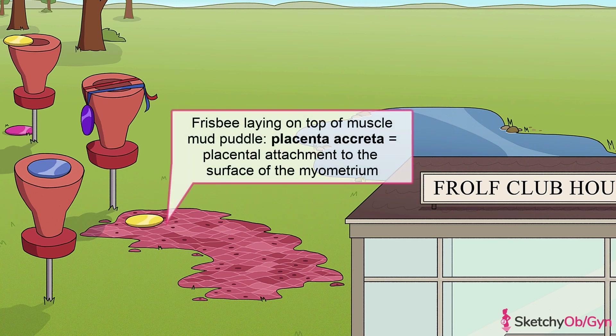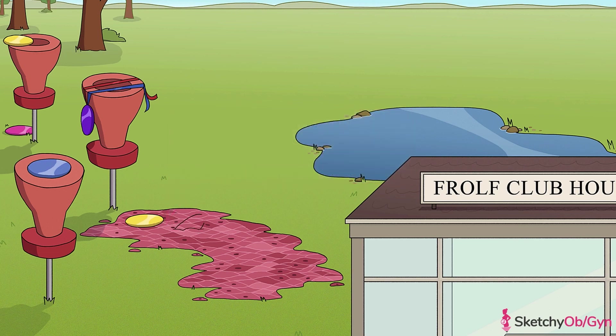Placenta accreta is when the chorionic villi are morbidly attached to the myometrium instead of the decidua basalis. This makes it very difficult to separate the placenta from the uterus at the time of delivery, and often trying to do so results in massive maternal hemorrhage.